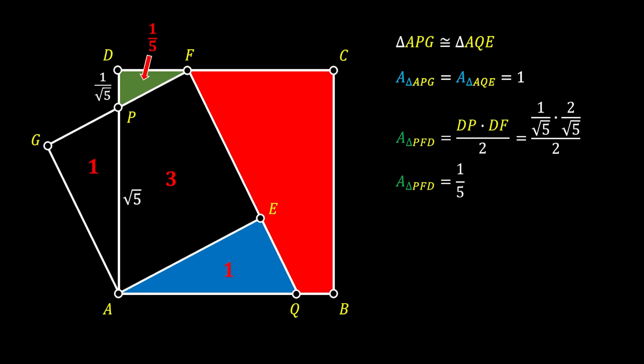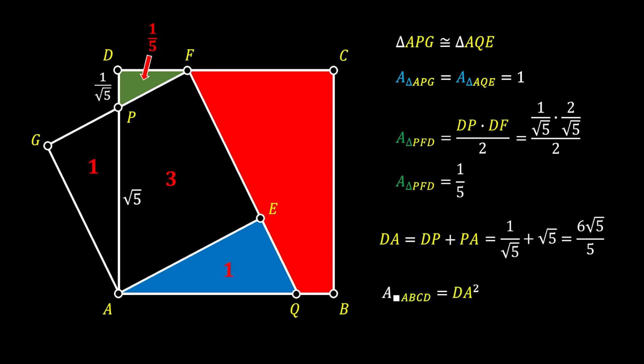Now let's find the area of the big square ABCD. We will first find its side DA, which is equal to the sum of the sides DP and PA. We already have those values, so substituting them in we get that the side DA is equal to six square root of five over five. Therefore, the area of this big square is equal to DA squared, and after substituting the value we get that this area is equal to 36 over five squared units.